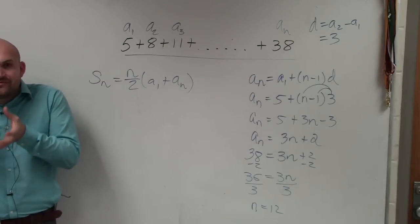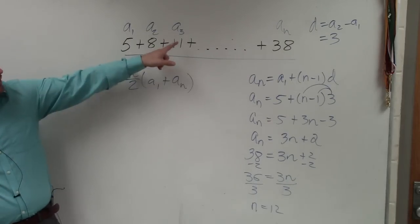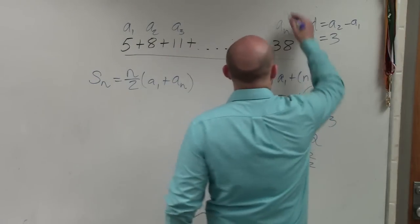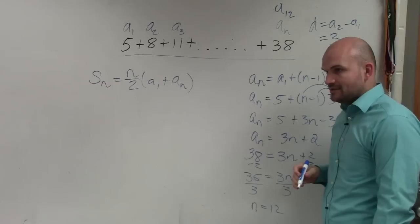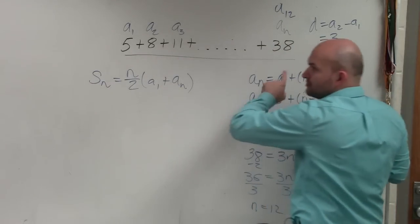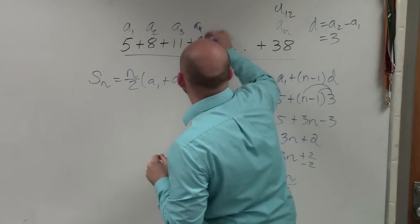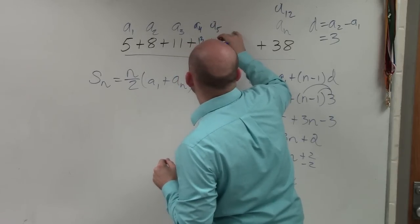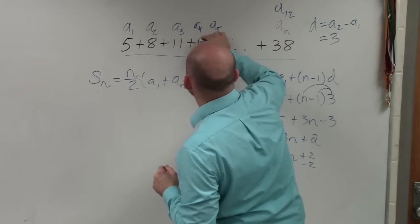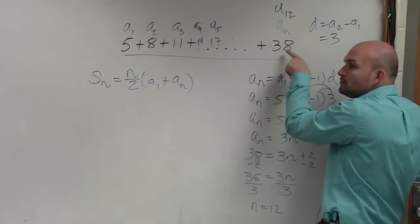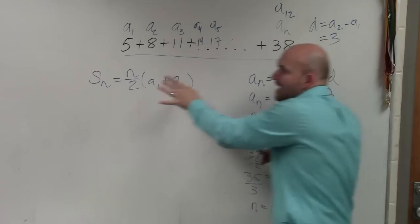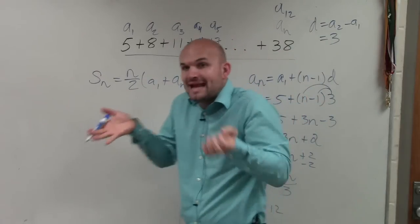Now, that's very important. Because now I know that this is not a sub n. This is now a sub 12. Because I know now there's 12 terms. If you were to keep on counting that's by 3, if you were to keep on counting, a sub 12 would be 38. Because now to do the sum, you have to know what n is. You have to know how many terms you're finding the sum for.